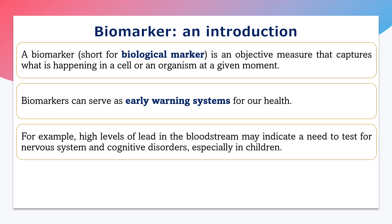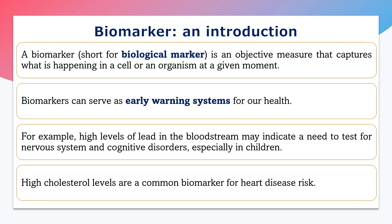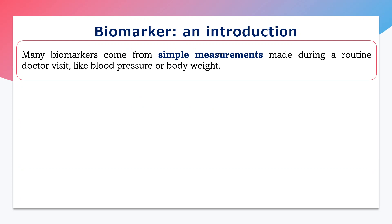For example, a high level of lead in our bloodstream may indicate the need for a test for the nervous system, because lead is normally a poison for our nervous system and can cause cognitive disorders, especially in children. Similarly, high cholesterol levels increase the chances of heart disease or cardiovascular disease. So high cholesterol level is a biomarker for cardiovascular disorders.